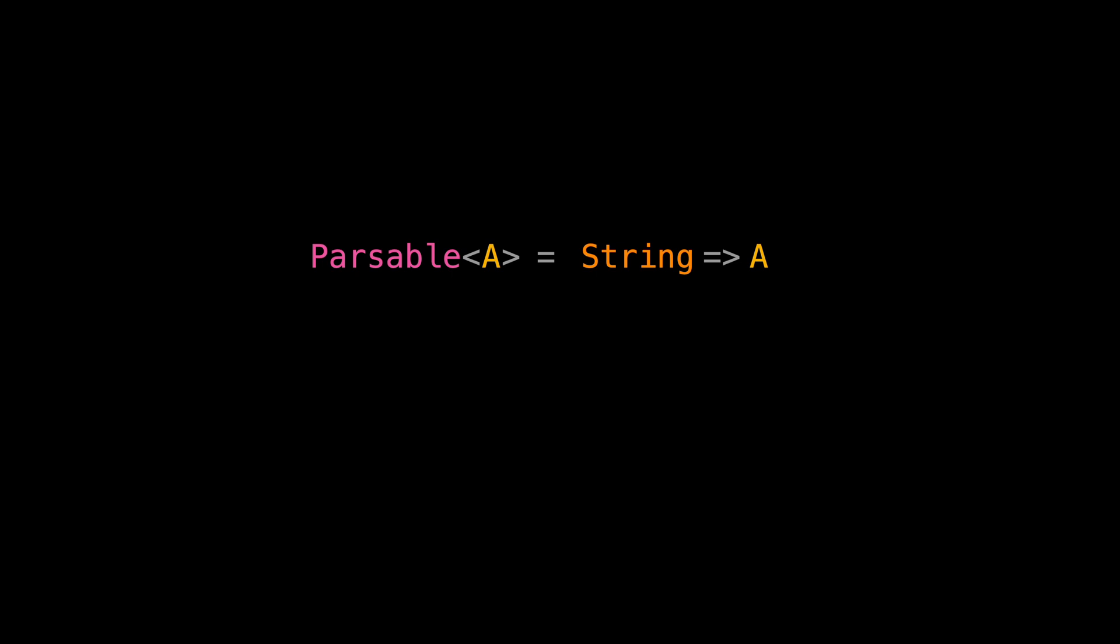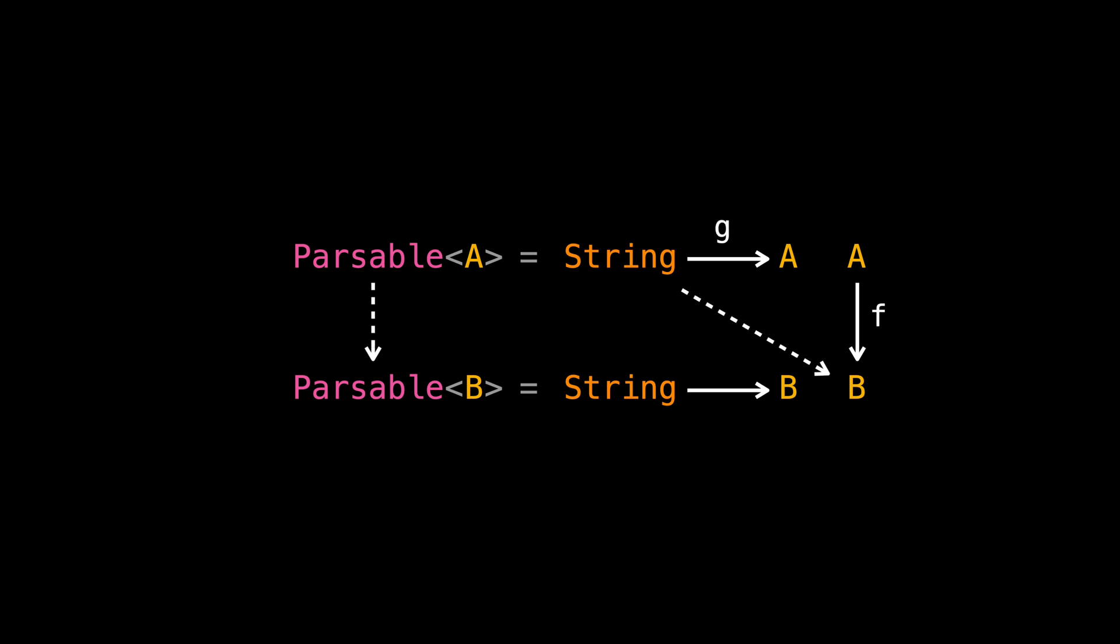Let's look again at what a functor is step by step. For Parsable to be functor we need to be able to get to Parsable of any type B using a general function F from A to B. Pause the video and try to see how you can get to Parsable B starting from Parsable A and function F. I think you already have some guesses. If we call the Parsable A function G, we can compose G and F like this. Let's label our new function F○G. Interestingly, F○G is exactly what we were looking for.